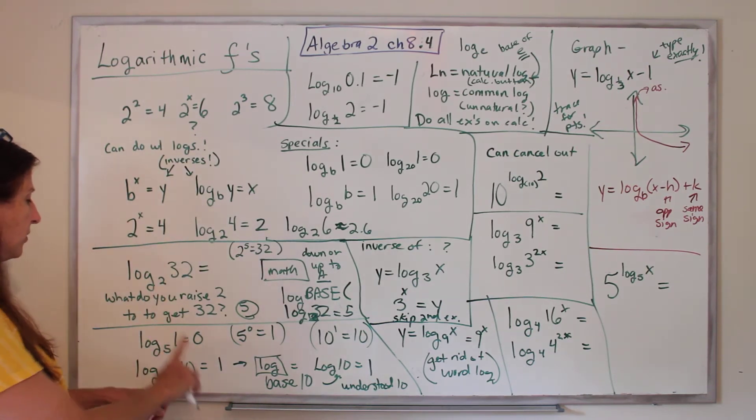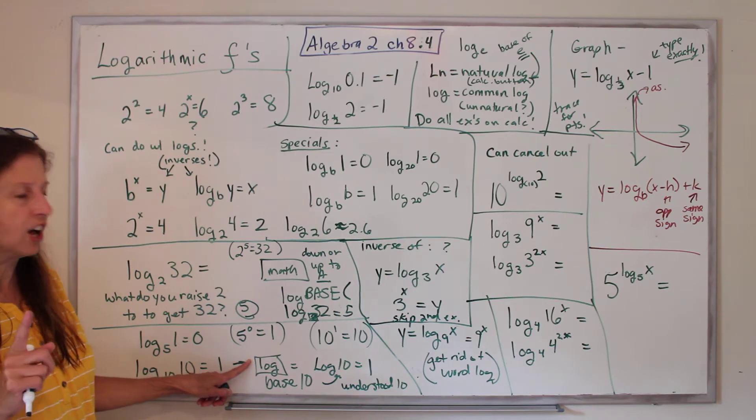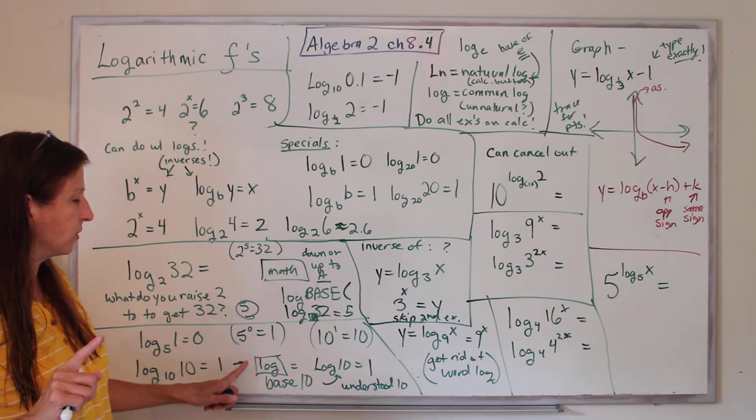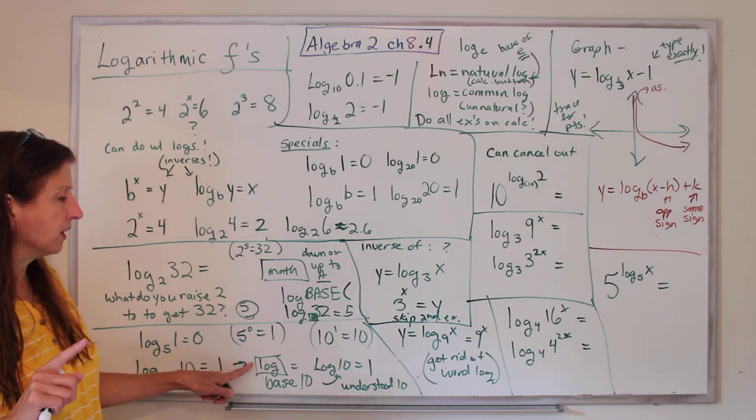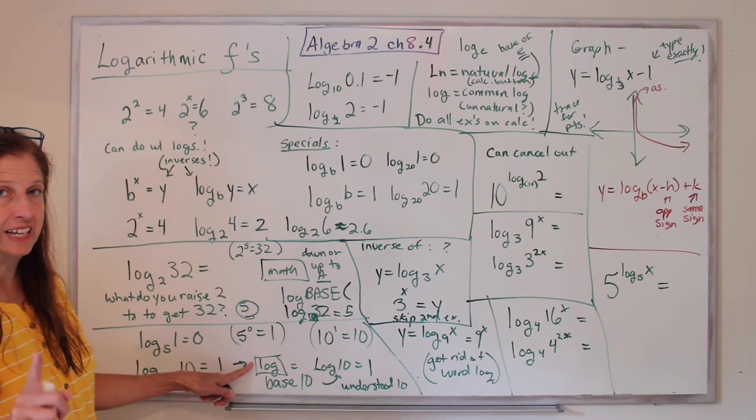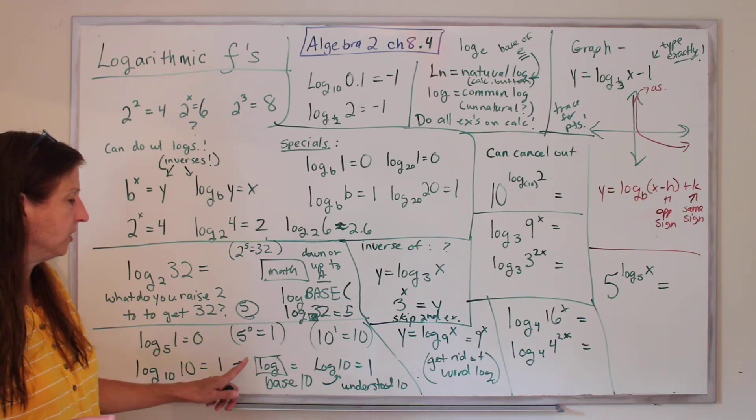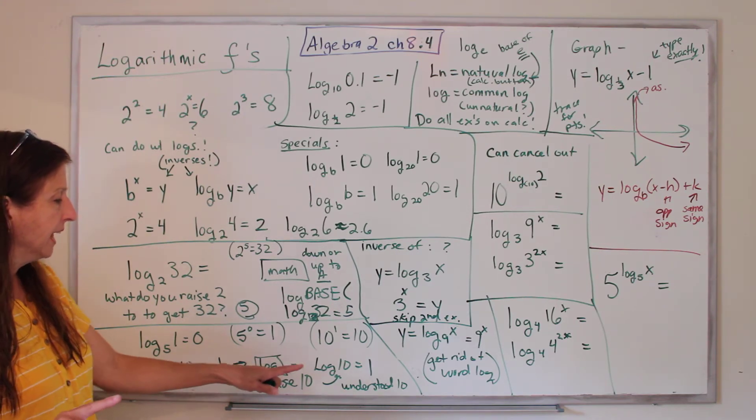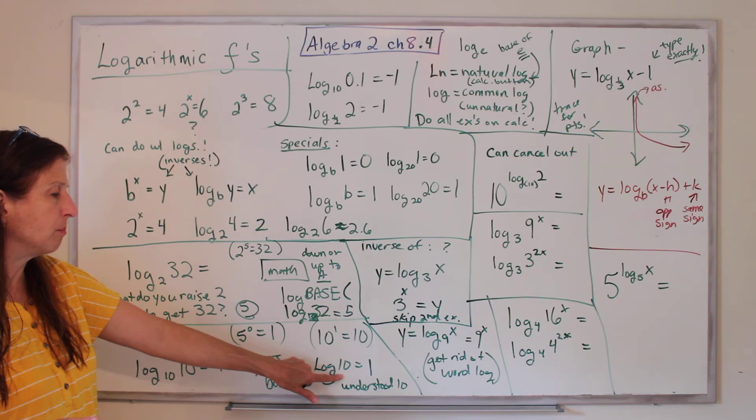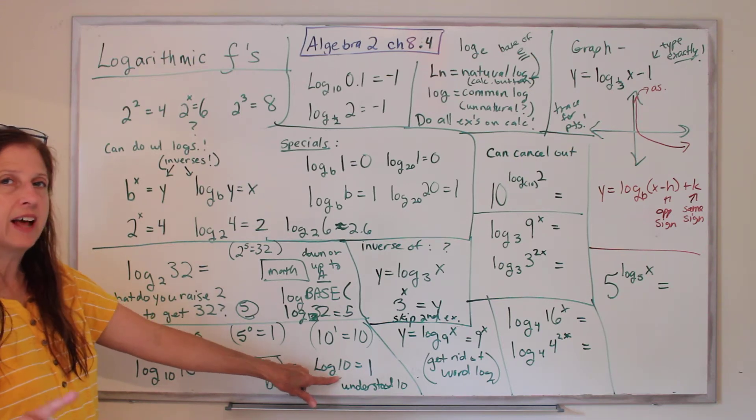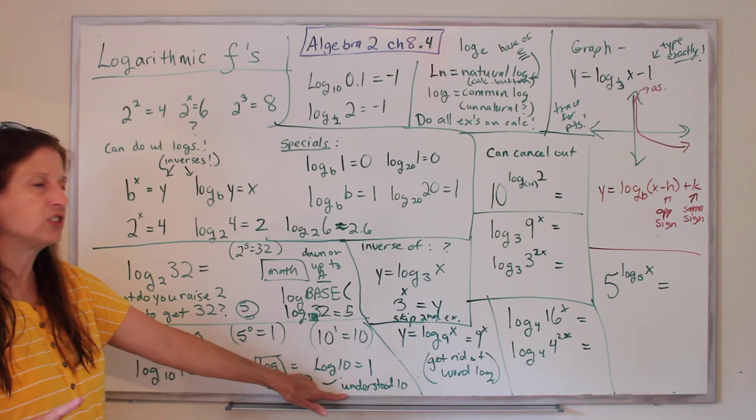Okay, now, turns out you have a button on your calculator that says log. That button, log, is log base 10. So whenever it's log base 10, it's a shortcut, and you can use the log button. Also, if there is no log base written, that's a shortcut, it's an understood 10.